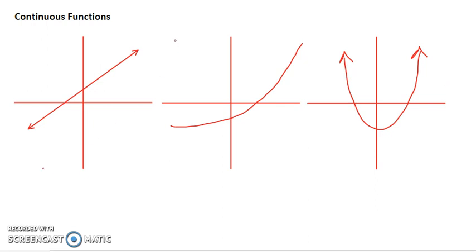A continuous function is a solid line all the way through. It would be a very simple way to put that.